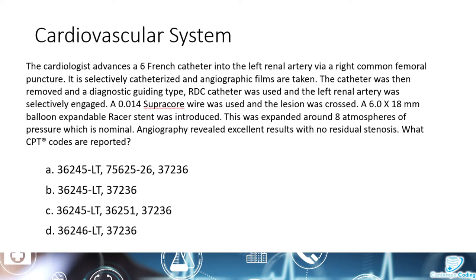A 6.0 x 18 mm balloon expandable racer stent was introduced. This was expanded around 8 atmospheres of pressure, which is nominal. Angiography revealed excellent results with no residual stenosis. What CPT codes are reported?